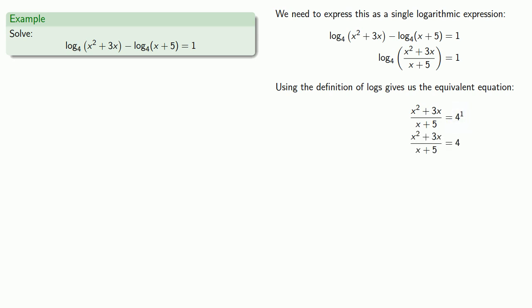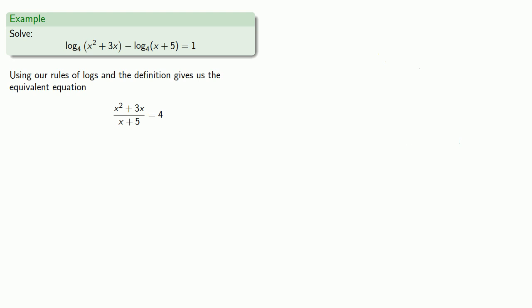Now we have a rational equation. We can start to simplify by multiplying by the denominator to eliminate the fraction. Our denominator is x plus 5, so we'll multiply both sides by x plus 5. The denominator factor of x plus 5 and the new factor of x plus 5 are common factors, so we can remove them.